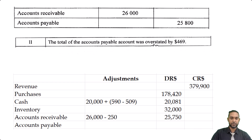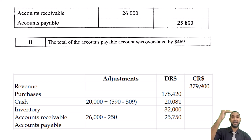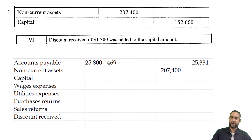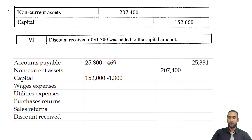Accounts payable was error two — overstated by $469. The figure in accounts payable is $25,800, and since it's overstated we subtract to bring it in line, giving us $25,331. Non-current assets had no adjustment. For capital, that was error six — the discount was included. So we subtract $1,500, giving us $158,700.